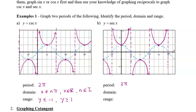The period is still two pi — it takes two pi before the graph repeats, requiring one U and one upside-down U to complete. For the domain, it's a little different because asymptotes are at pi over two and then every pi after that. So the domain cannot include pi over two plus n pi, where n is an integer. Same as cosecant, the range is y less than or equal to negative one and y greater than or equal to one.